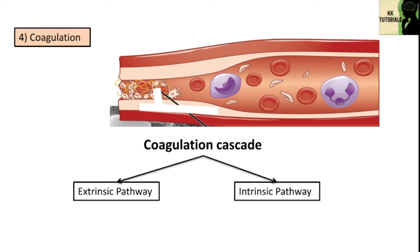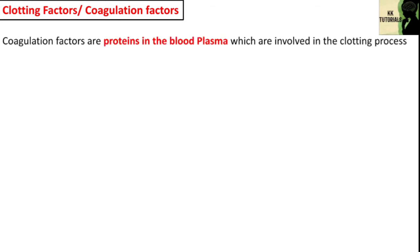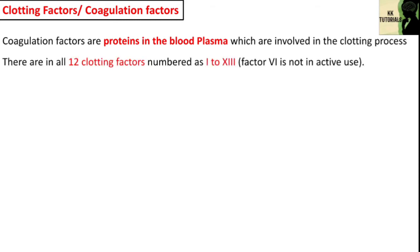You will get information about these pathways in the upcoming video. Before starting with these pathways, you must know the clotting factors involved. Clotting factors or coagulation factors are proteins in blood plasma which are involved in the clotting process. There are in all 12 clotting factors, numbered 1 to 13 in Roman numerals — note that factor 6 is not in active use.